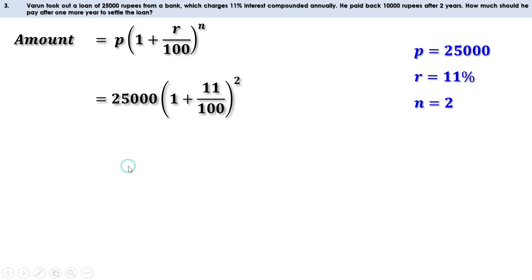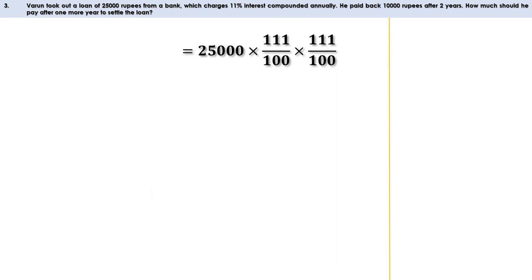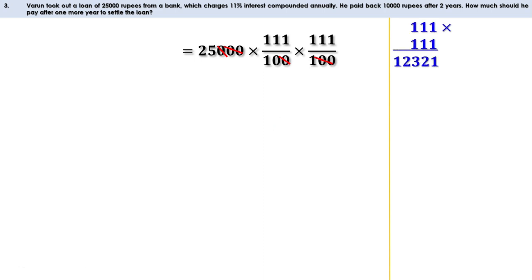This can be written as 25,000 into (111 by 100) all squared, which is 111 by 100 into 111 by 100. So this becomes 25,000 into 111 by 100 into 111 by 100. Cancelling 3 zeros from numerator and denominator, what remains is 25 into 111 into 111 divided by 10. Let us multiply 111 by 111 first — we get 12,321.